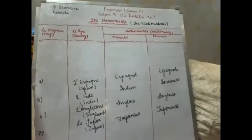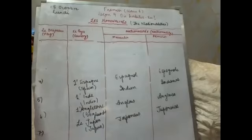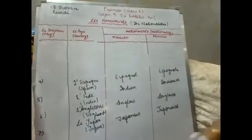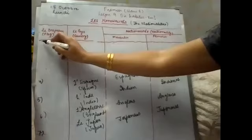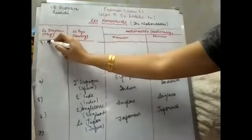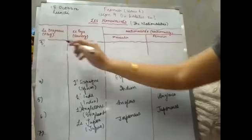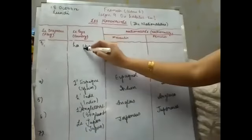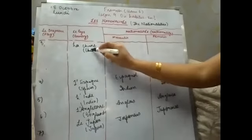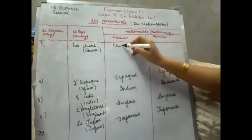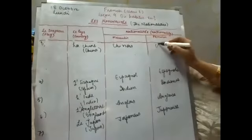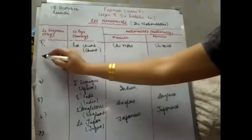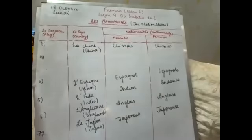Proceeding further, next is La Chine, that is China. The nationalities are Chinois and Chinoise.